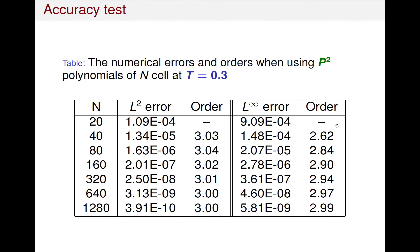Next, we consider the accuracy test. We still use DG methods with piecewise quadratic polynomials, but at time t equals 0.3 when the solution is still smooth. We consider the L2 norm and L-infinity norm of the error. From the table, we can see that we achieve the expected third order of accuracy.